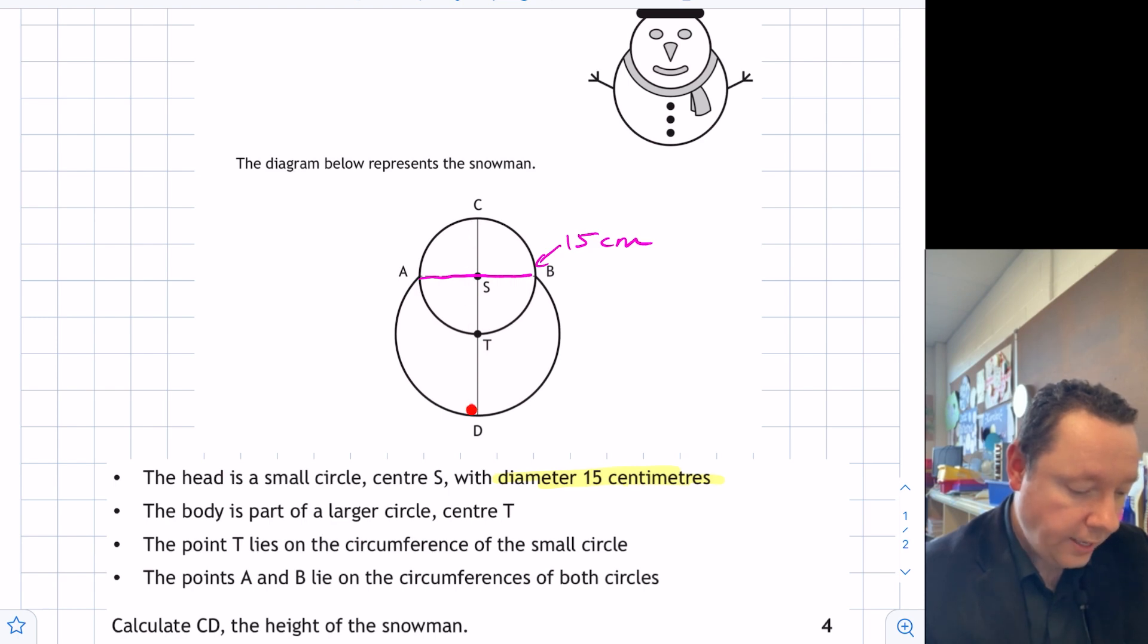And let's just double check what it's asking us to calculate. It's asking us to calculate this whole height. Well, we already know that from here to here is also a diameter, so that's 15. So really the problem becomes, how do I calculate from here to here? Let's draw that line in then. I want to go from here to here. And I don't know what that is.